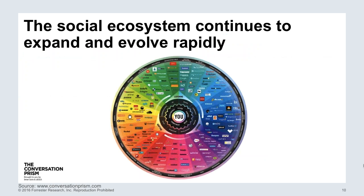The social ecosystem is evolving rapidly. This slide has over 200 different social networks that exist today, categorized by each of these different categories.